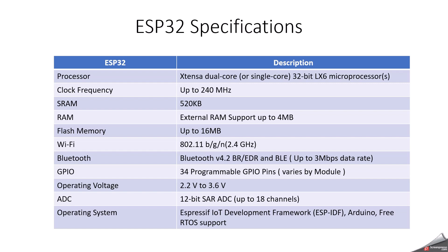Based on your application, you can buy a particular ESP32 and use it. The operating voltage of ESP32 is 2.2V to 3.6V, so you can easily power up the ESP32 from your laptop itself — you just need a USB cable to power it up. It also supports up to 18 channels and 12-bit ADC.